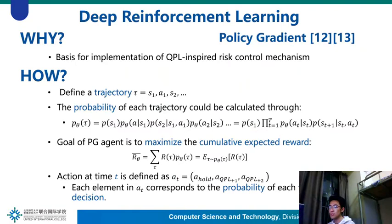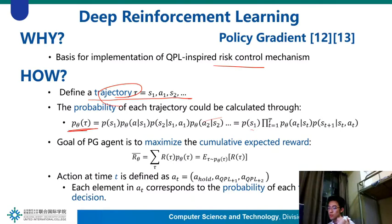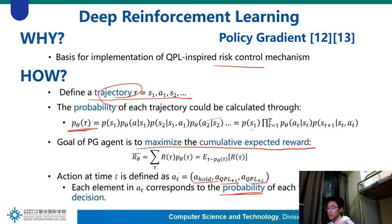We utilize the policy gradient agent for risk control. Previously, we mentioned three types of actions, and this process is implemented by PG. We define a trajectory Tau, and the probability of each trajectory is calculated through the corresponding formula. The goal of the PG agent is to maximize the cumulative expected return. The action of the policy gradient agent at time t is defined using vector AT, where each element corresponds to the probability of each type of decision, and the action is sampled by the policy.